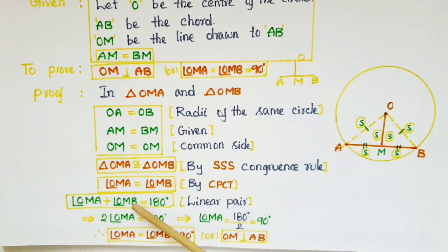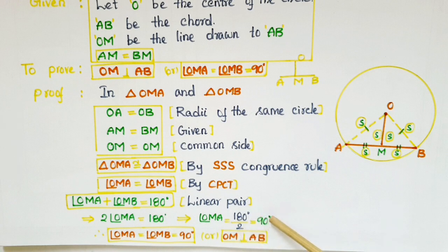Angle OMA plus angle OMB is equal to 180 degrees, and we have proved that angle OMA is equal to angle OMB. So two times angle OMA is equal to 180 degrees. Therefore, angle OMA is equal to 180 by 2 that is 90 degrees.